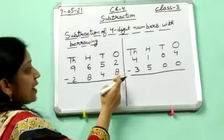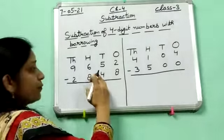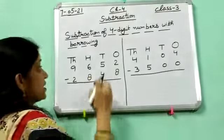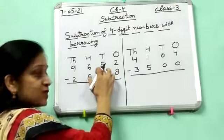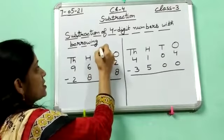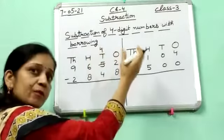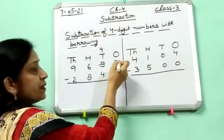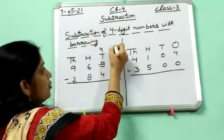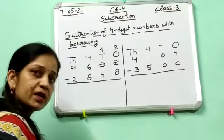You can't subtract 8 from 2. So you have to borrow from the 10's place. If we borrow from 10's place, here it becomes 4 because we have borrowed, and here it comes 10, and 10 plus 2 is 12. Understood?